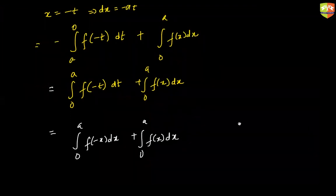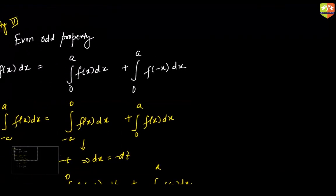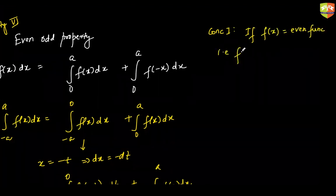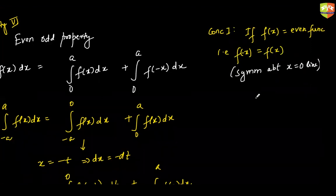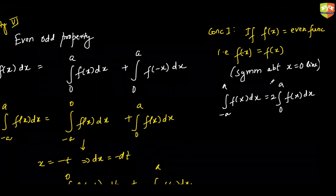Now two important conclusions that we can draw from here. Conclusion number one. If your f of x is even function, that is to say that f of minus x is f of x. Also as to say that the graph is symmetrical about x equal to 0 line which is nothing but your y axis. Then your integral from minus a to a f of x dx is going to be 2 times 0 to a f of x. Guys remember I have not said this but the function is continuous from minus a to a.